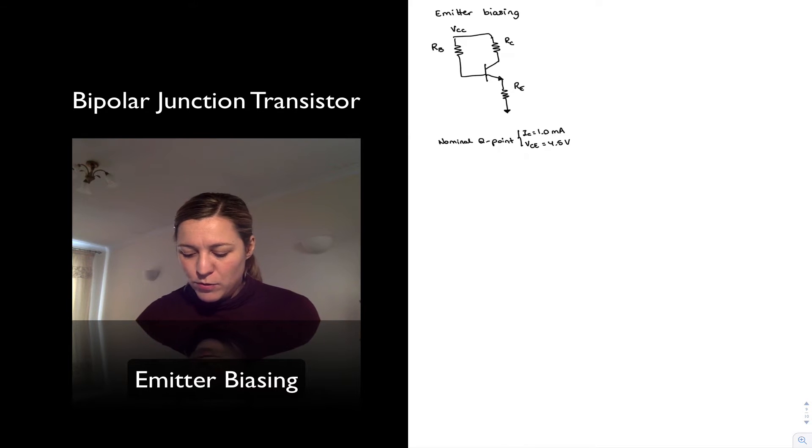Why 4.5 volts? Well, I would like to center my collector terminal, my VC voltage, which is here, at around halfway between the supply and ground. And so if this is 5 volts and I have 1 mA flowing through this branch,